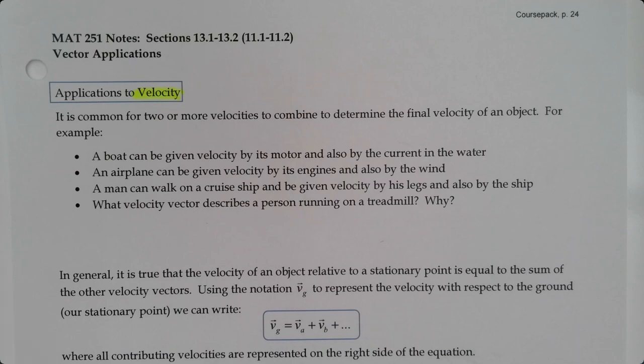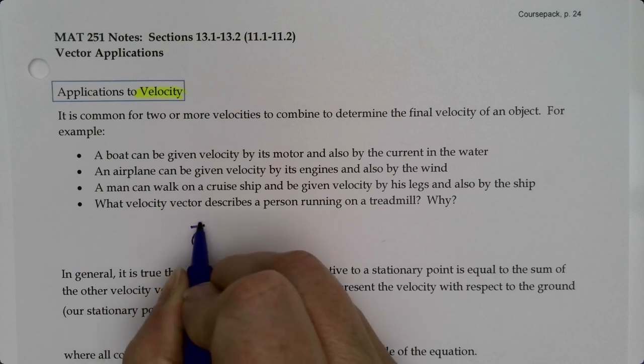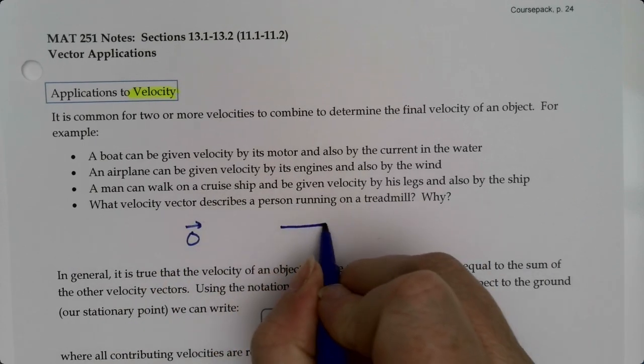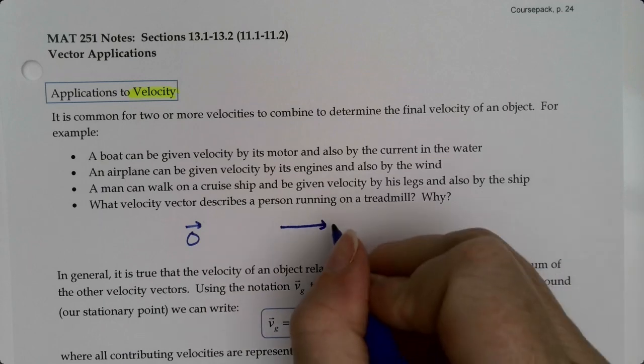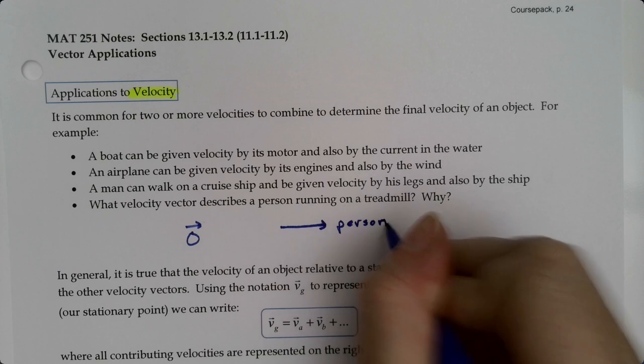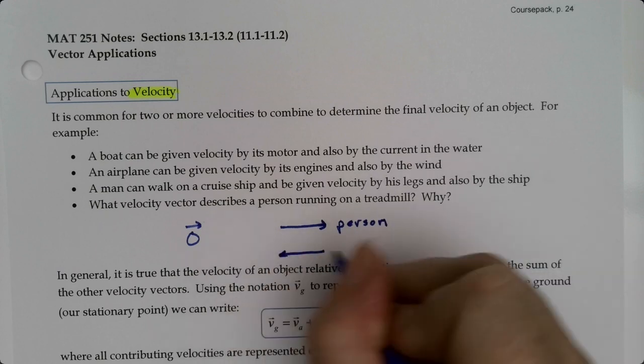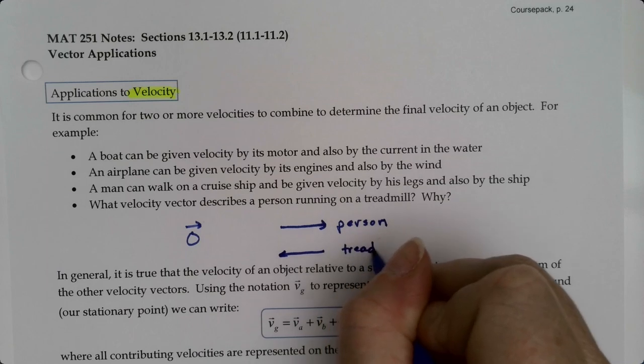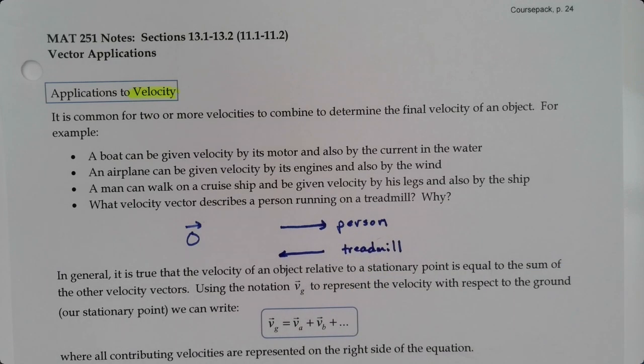Now what would the velocity be for a person that is running on a treadmill and why? Well the answer to that is a little deceptive, but it's zero. What's happening is the person is going one way and the treadmill has to go the opposite way, and they have to match or the person falls off the treadmill.